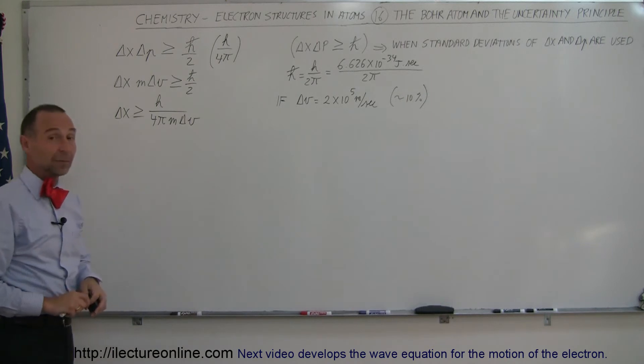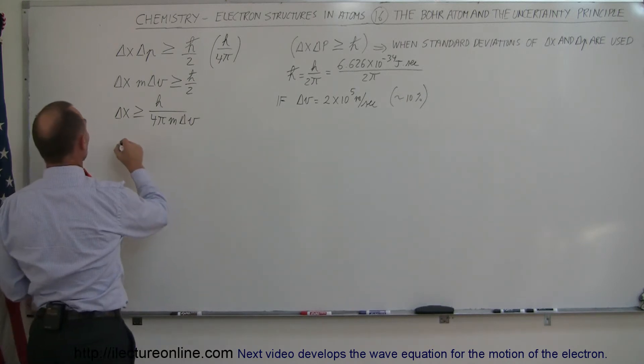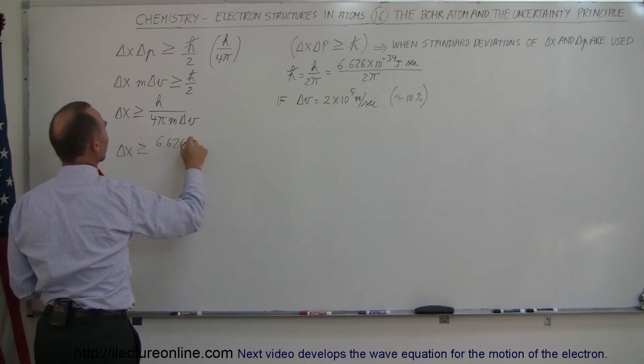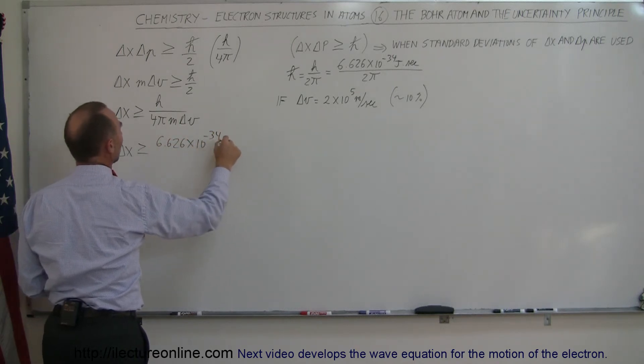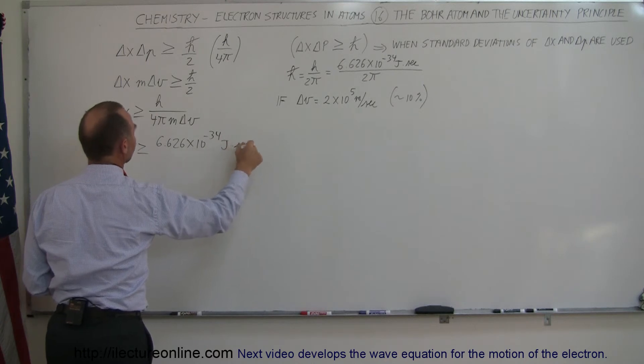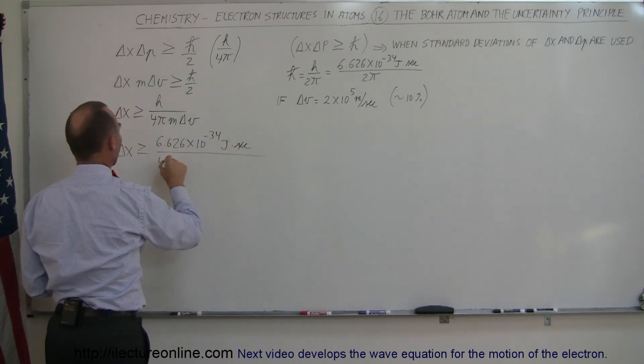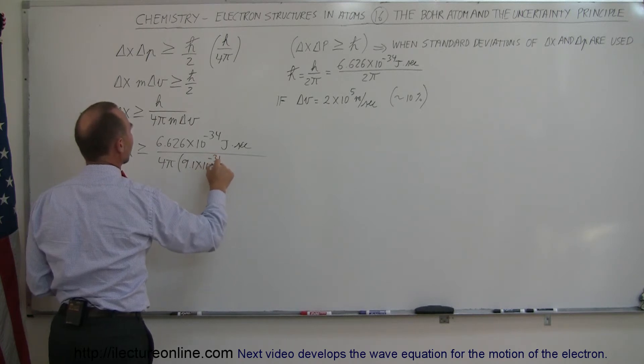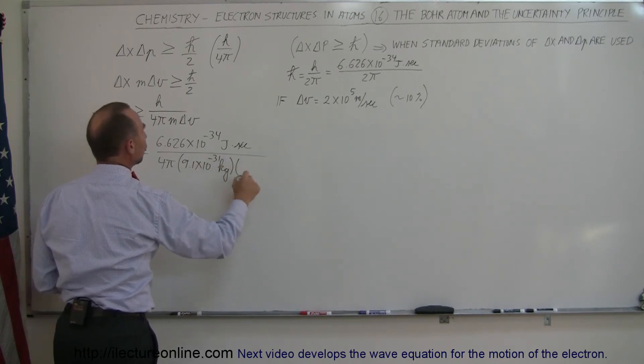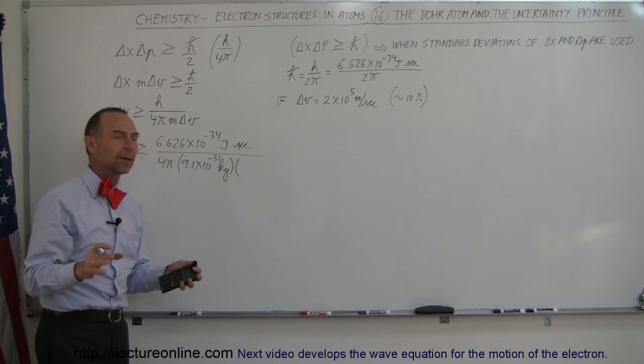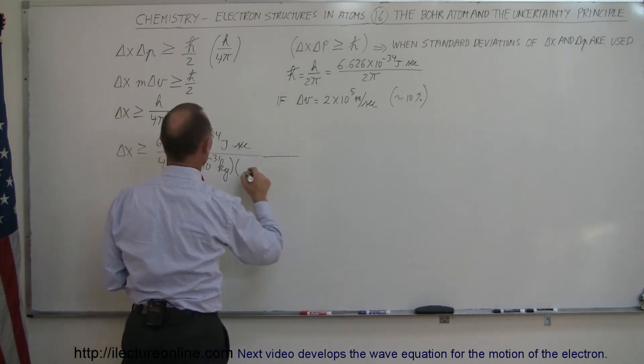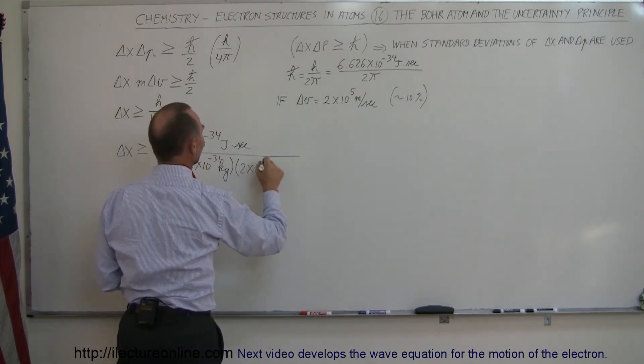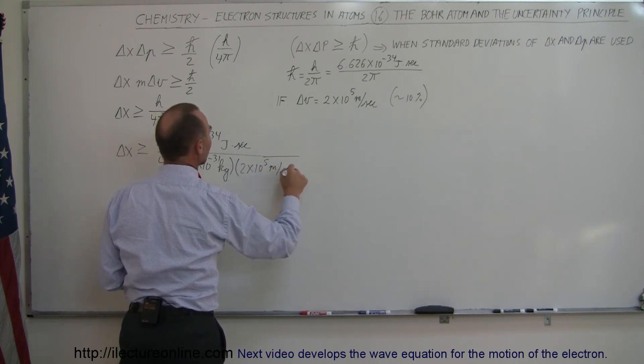I guess before I calculate, I better put in the values. So the uncertainty in the position is going to be greater than or equal to 6.626 times 10 to the minus 34 joules times seconds, divided by 4π, divided by the mass, 9.1 times 10 to the minus 31 kilograms, and then we assume an uncertainty in its velocity by about 10% of its normal velocity, which is 2 times 10 to the fifth meters per second.